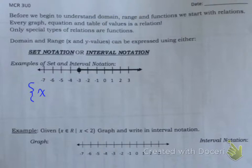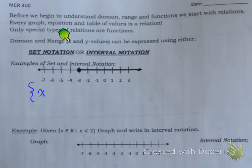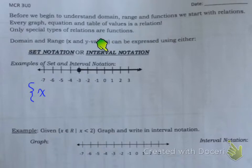So ultimately, that's what we're starting off with - what is a relation. Now, only special types of relations are actually functions, and this is where we're going to have to understand this. Because domain and range - domain being the x values and range being the y values - can be expressed using either set notation or interval notation.